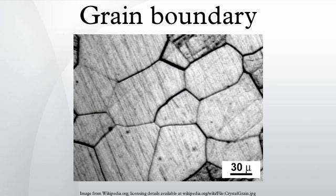The majority of boundaries are of a mixed type, containing dislocations of different types and Burgers vectors, in order to create the best fit between the neighboring grains. If the dislocations in the boundary remain isolated and distinct, the boundary can be considered to be low angle. If deformation continues, the density of dislocations will increase and so reduce the spacing between neighboring dislocations. Eventually, the cores of the dislocations will begin to overlap and the ordered nature of the boundary will begin to break down. At this point the boundary can be considered to be high angle and the original grain to have separated into two entirely separate grains.